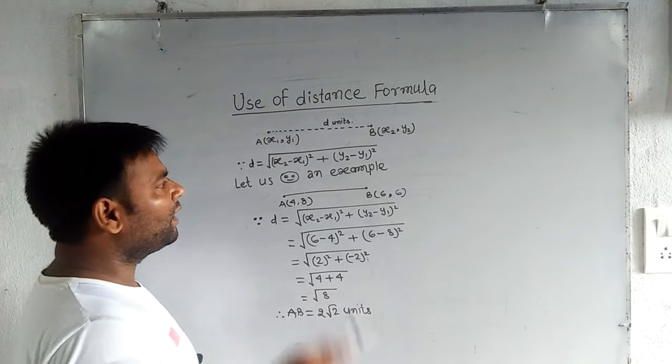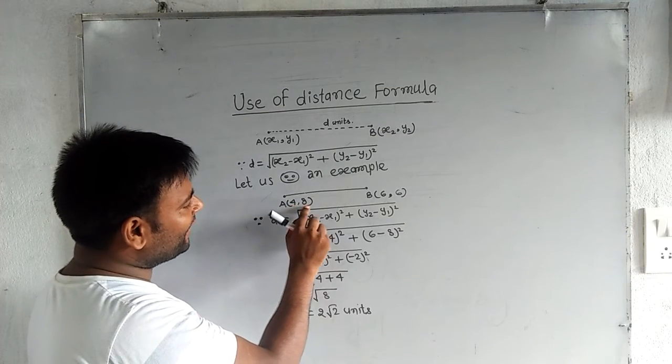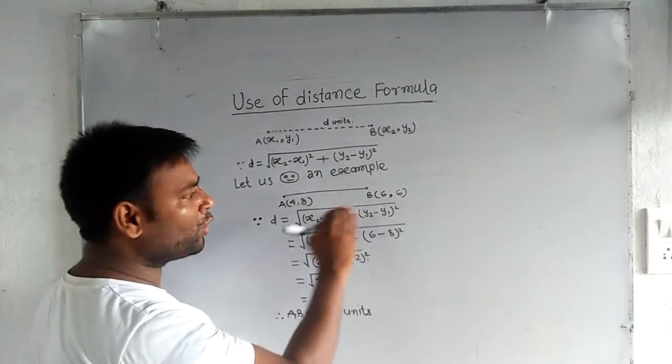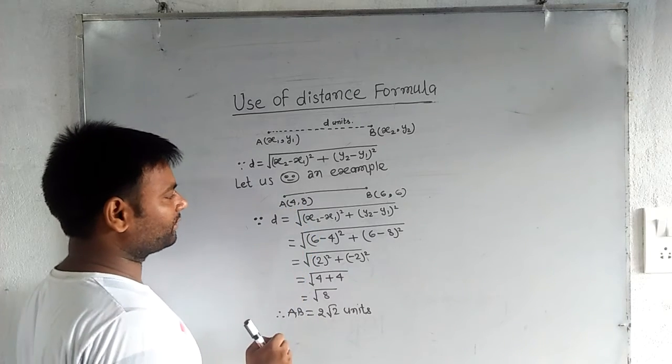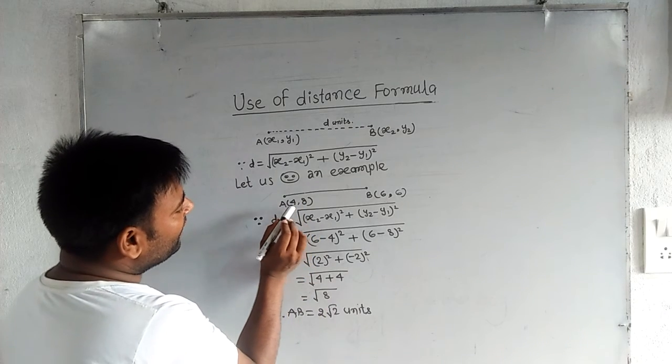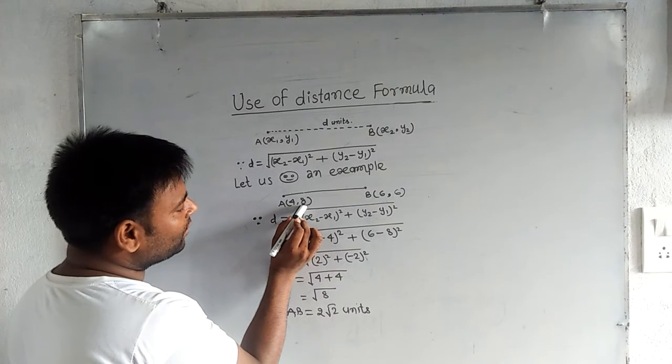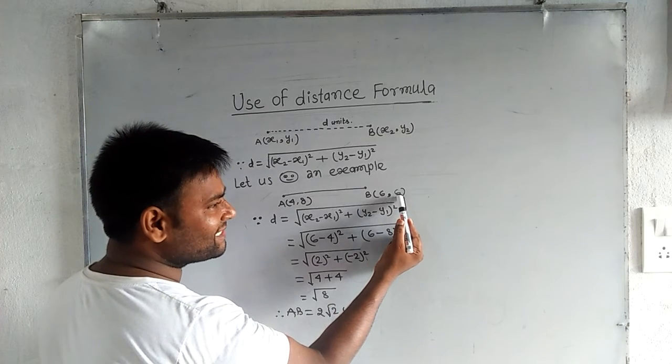Let us see an example. Here A(4, 8) and B(6, 6) are two given points in a coordinate plane whose coordinates are given. Here 4 is x1, 8 is y1, 6 is x2, and this 6 is y2.